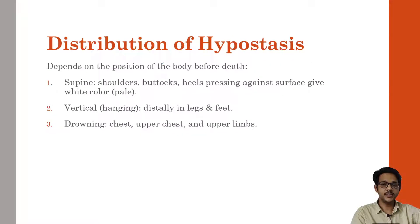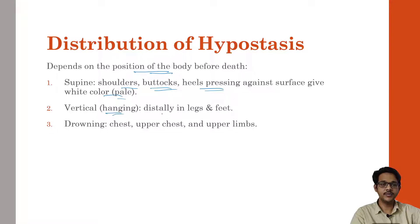Distribution of hypostasis mainly depends on the position of the body. If the person has died in a supine position, it is mainly present in the shoulders and buttocks regions. But in regions where the body touches the ground, it will be paler in color, mainly in regions of heels or shoulder blades. If the person has died vertically, mainly in case of hanging, it is usually present in the legs and feet. In case of drowning, it may be seen in the chest region, upper chest region or upper limbs.